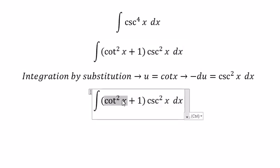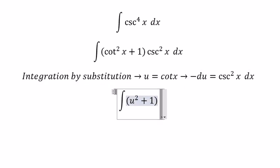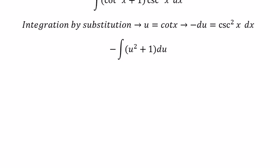This one we change to u squared, this one we change to negative du, and now we get the final answer. The integral of u squared plus one du, which gives us u cubed over three plus u, and u should be cotangent x.